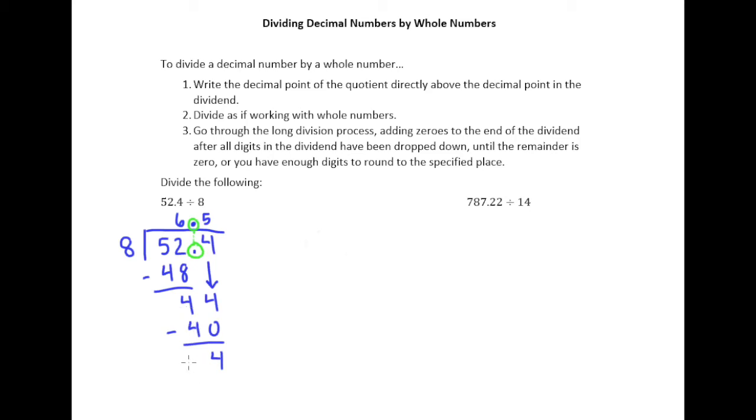When we're working with decimals, we do not want to mess with remainders at all. We never want a remainder to be a part of our answer. So what we do with decimals is we just continue to divide until one of two things happens.